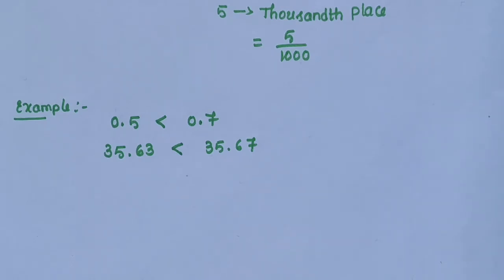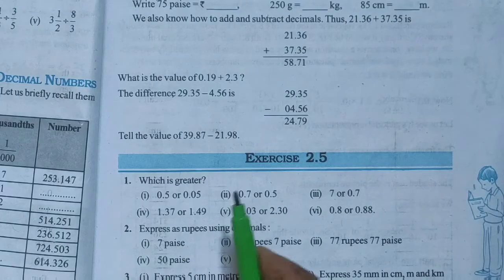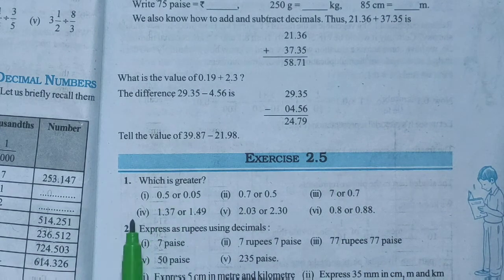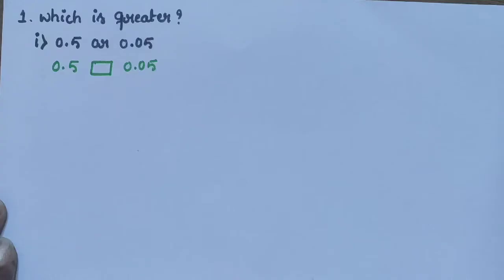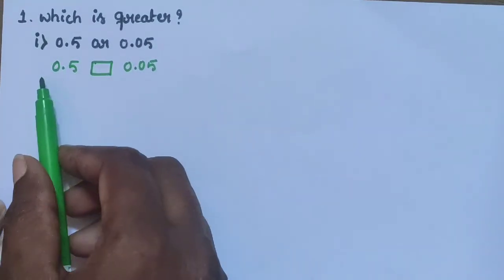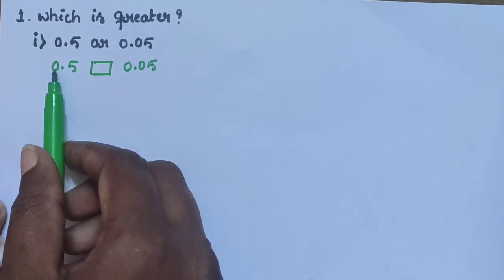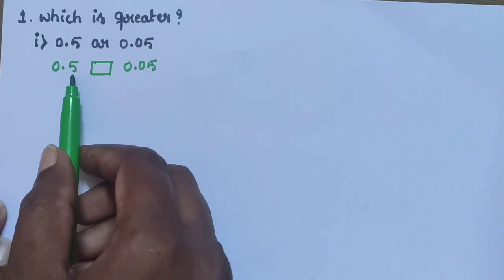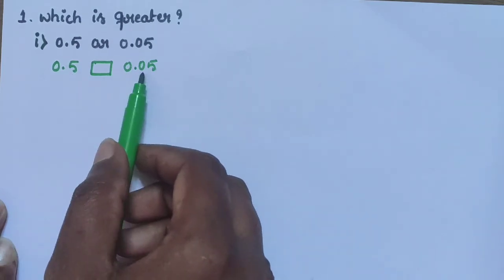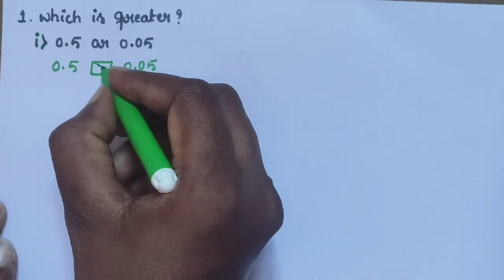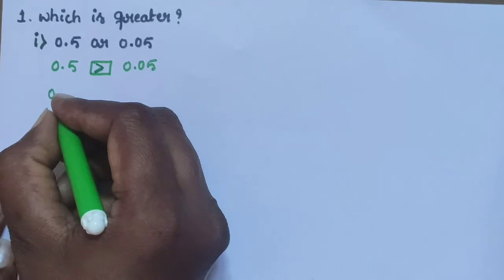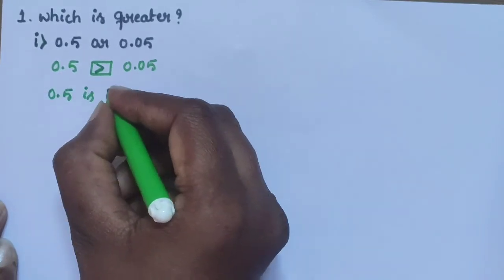Next I will go to Exercise 2.5. Question 1: Which is greater? Sub-question 1: 0.5 or 0.05. First compare the whole number part — units place is 0 and 0, same. Now compare the decimal part: tenths place is 5 and 0. Compare 5 and 0 — 5 is greater. Therefore, 0.5 is greater.